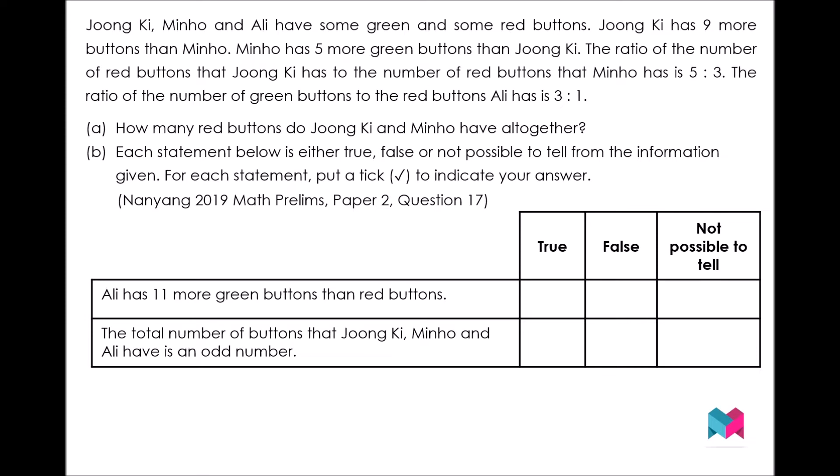The question is: Jungki, Minho and Ali have some green and some red buttons. Jungki has nine buttons more than Minho. Minho has five more green buttons than Jungki. The ratio of the number of red buttons that Jungki has to the number of red buttons that Minho has is 5 to 3.